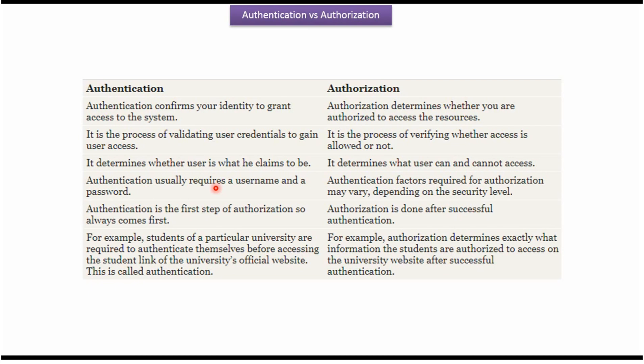Authentication usually requires a username and password. Authentication factors required for authorization may vary depending on the security level. Authentication is the first step — it always comes first — and authorization is done after successful authentication. For example, students of a particular university are required to authenticate themselves before accessing the student link of the university's official website; this is authentication. Authorization then determines exactly what information the students are authorized to access on the university website after successful authentication.